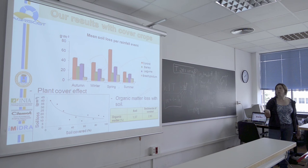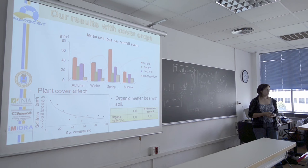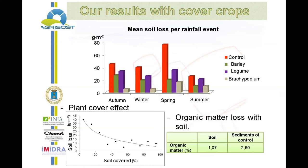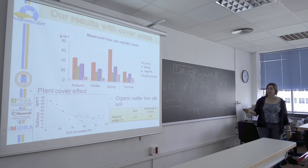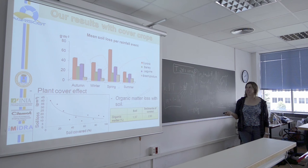We also studied the organic matter lost with the soil. This is a very poor soil — we have only around 1% of organic matter. We measured the organic matter of the sediments delivered with the control treatment and found 2.60%. So we are losing a high quantity of organic matter. In this project we didn't measure the nutrients being lost, but that work is being done by a colleague.